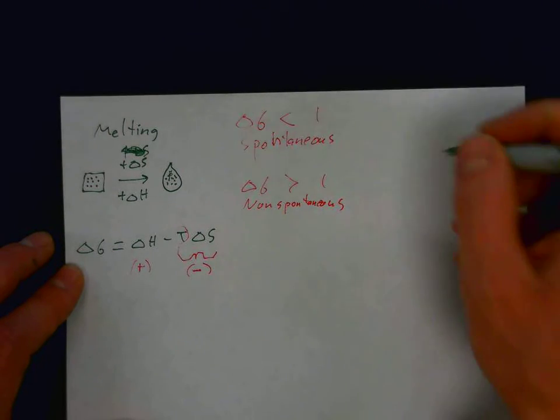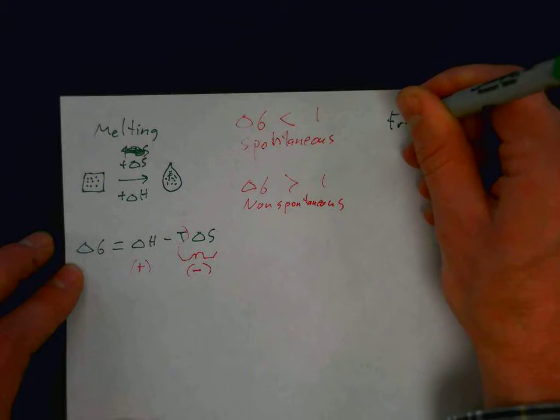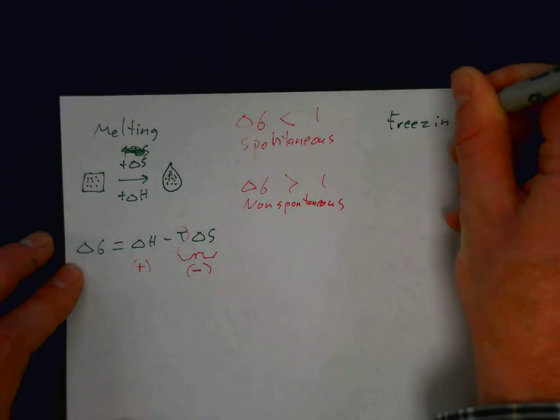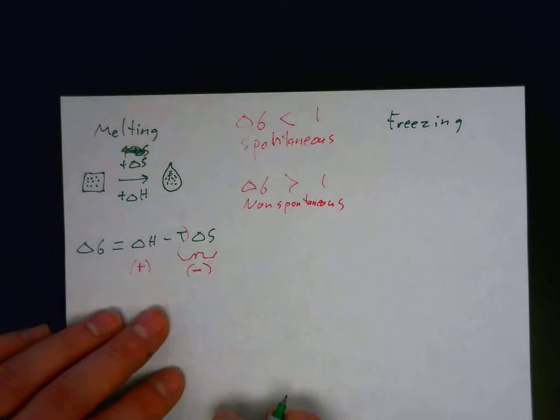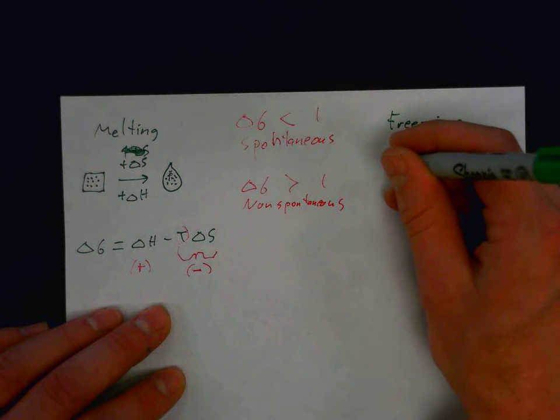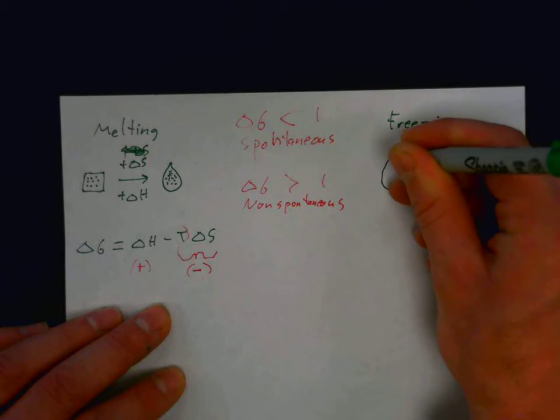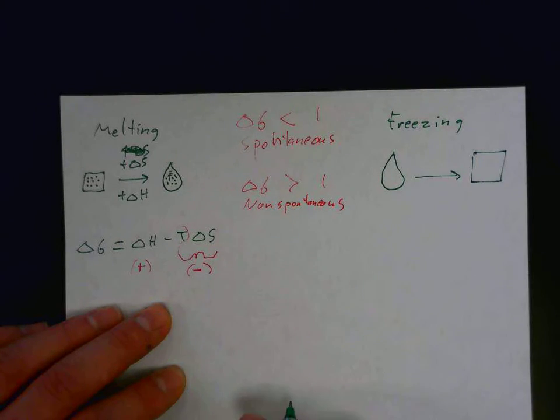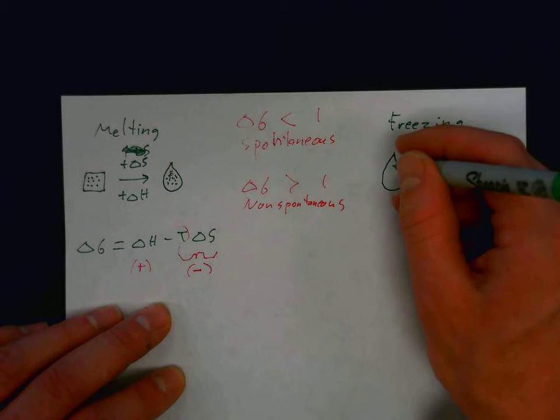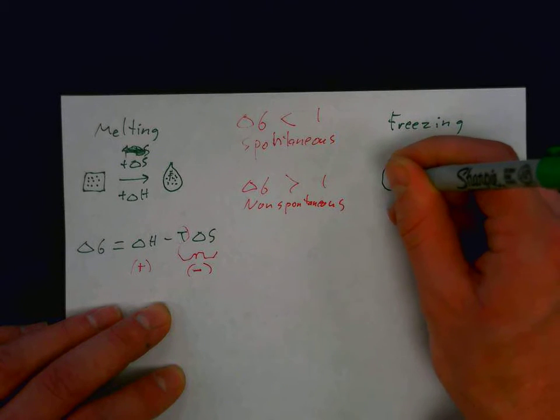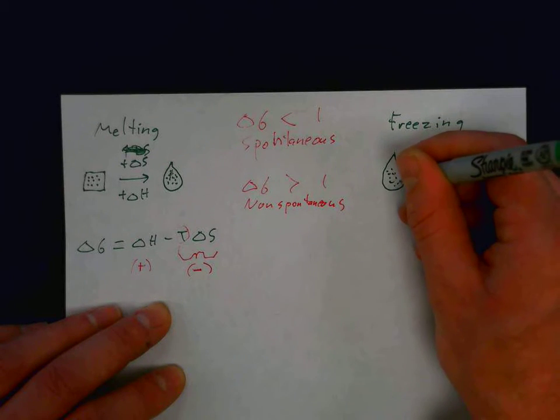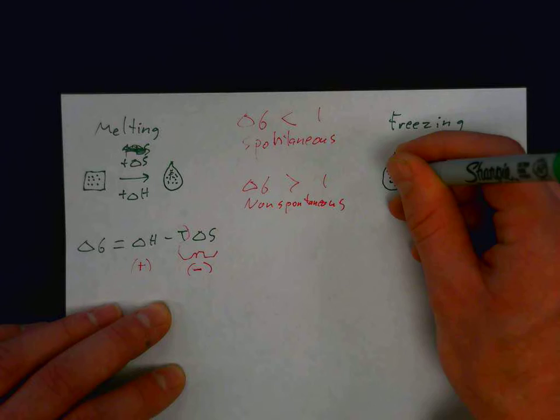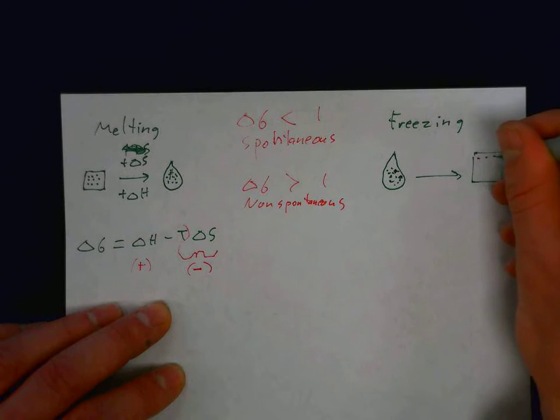So, let's illustrate then what happens during freezing. Freezing is when a liquid becomes a solid. The entropy is higher in the liquid state. It's a more disordered form, we could say, than the solid state.